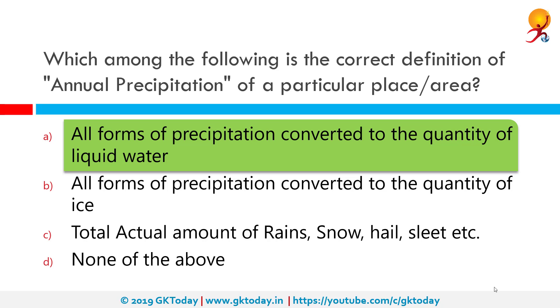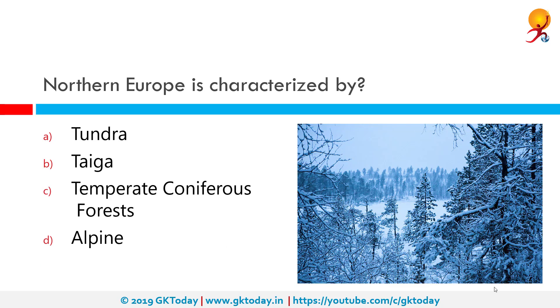Average annual precipitation in India is about 300 to 650 millimeters, but that is very unreliable as much of India relies on only the southwest monsoon for most of its precipitation.